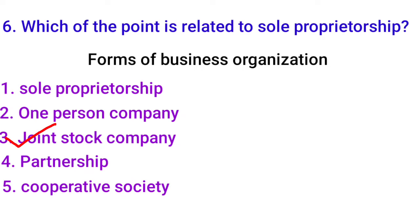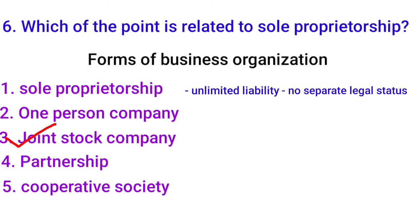Sole proprietorship has unlimited liability. If the business has a loss, the owner must pay even from personal assets. Coming to partnership — a partnership firm is formed by two or more persons. Remember, partnership also has unlimited liability — partners and business are the same entity legally, so partners' own assets can be used to settle debts.